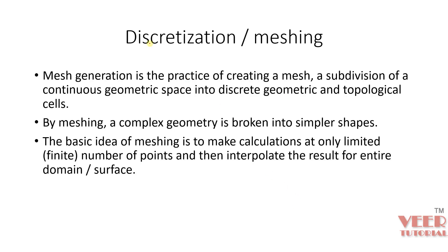Now let's understand what discretization is. We have two terms: discretization and meshing. When we use finite element in academics, we call this discretization. In industry, it is called meshing. Mesh generation is the practice of creating a mesh — a subdivision of a continuous geometry space into discrete geometry and topological cells. In meshing, a large and complex geometry is broken into simpler shapes.